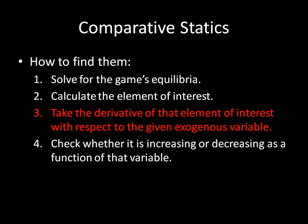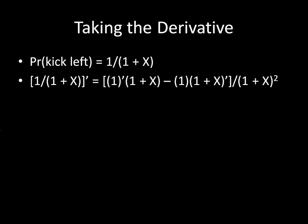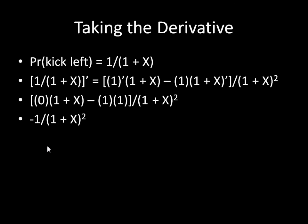The next step is to take the derivative of that element of interest with respect to the given exogenous variable. The exogenous variable here is the kicker's accuracy, represented by X. We're going to take the derivative of the probability that the striker kicks to the left — which is 1 over 1 plus X — with respect to X. Using the quotient rule, we get negative 1 over (1 plus X) squared. So that's the derivative.